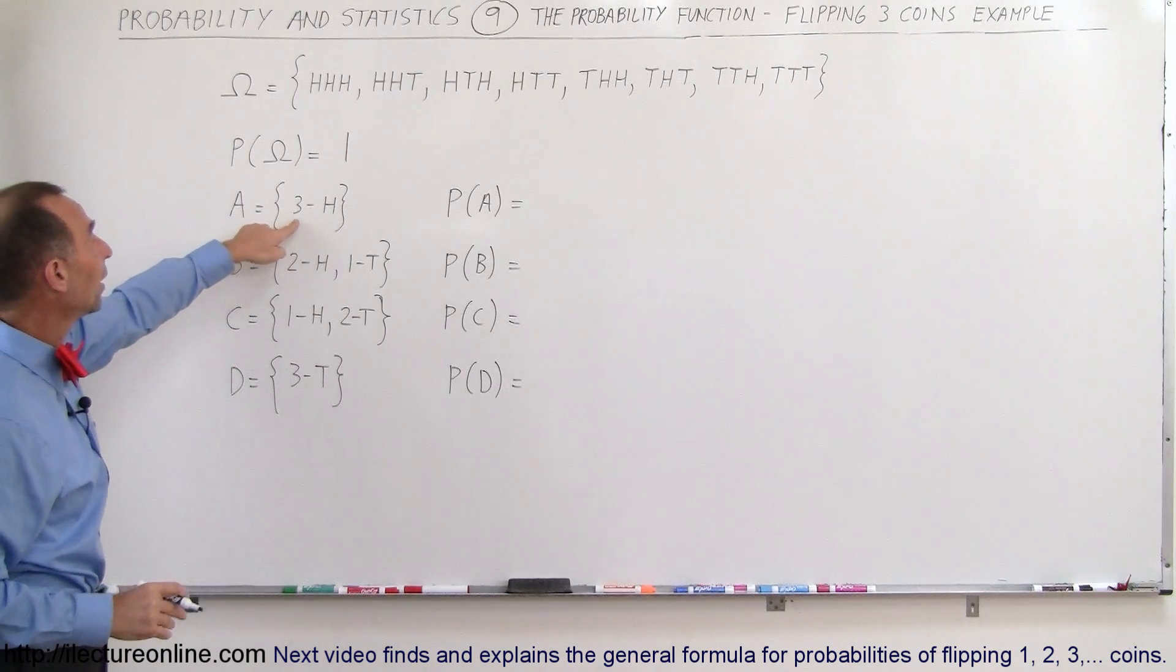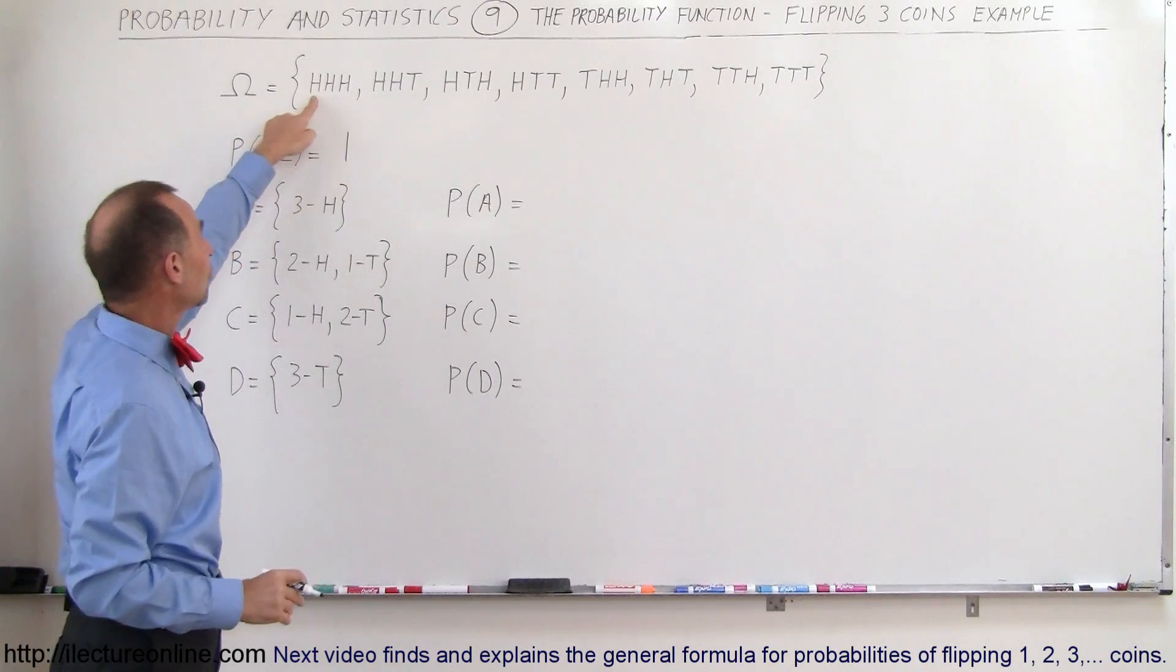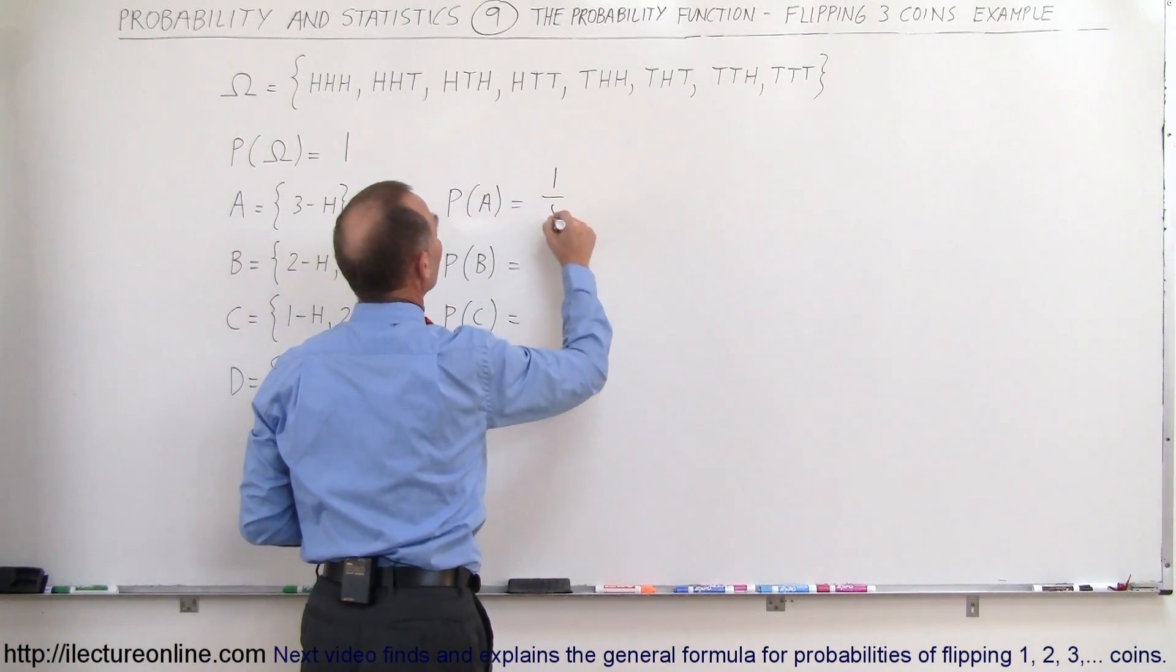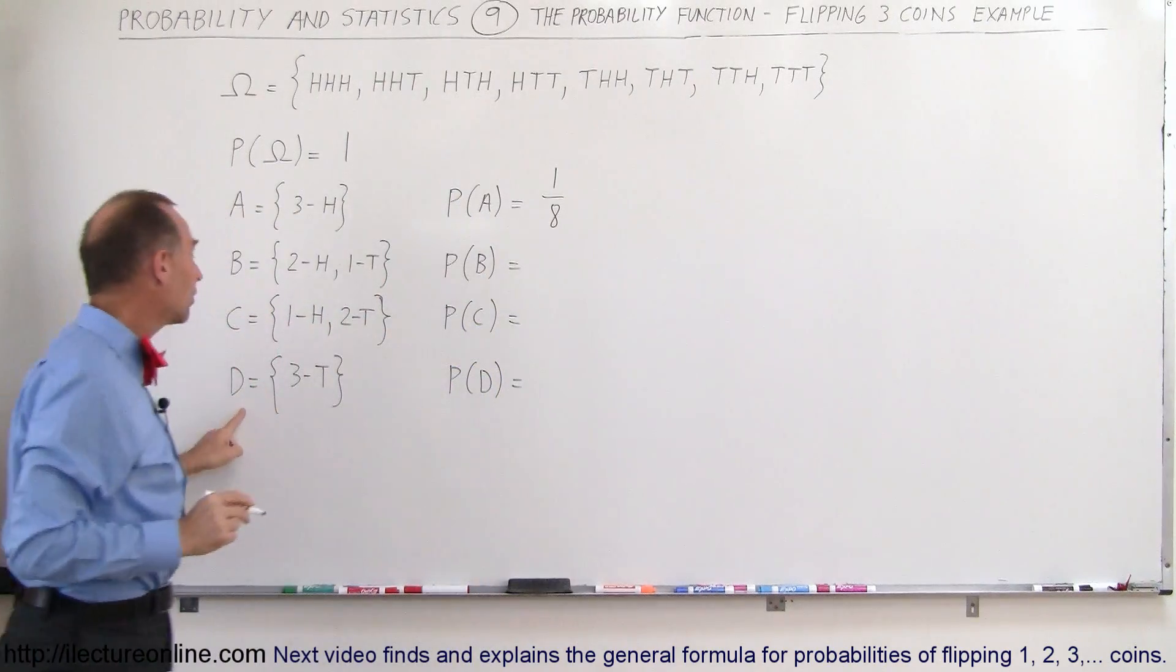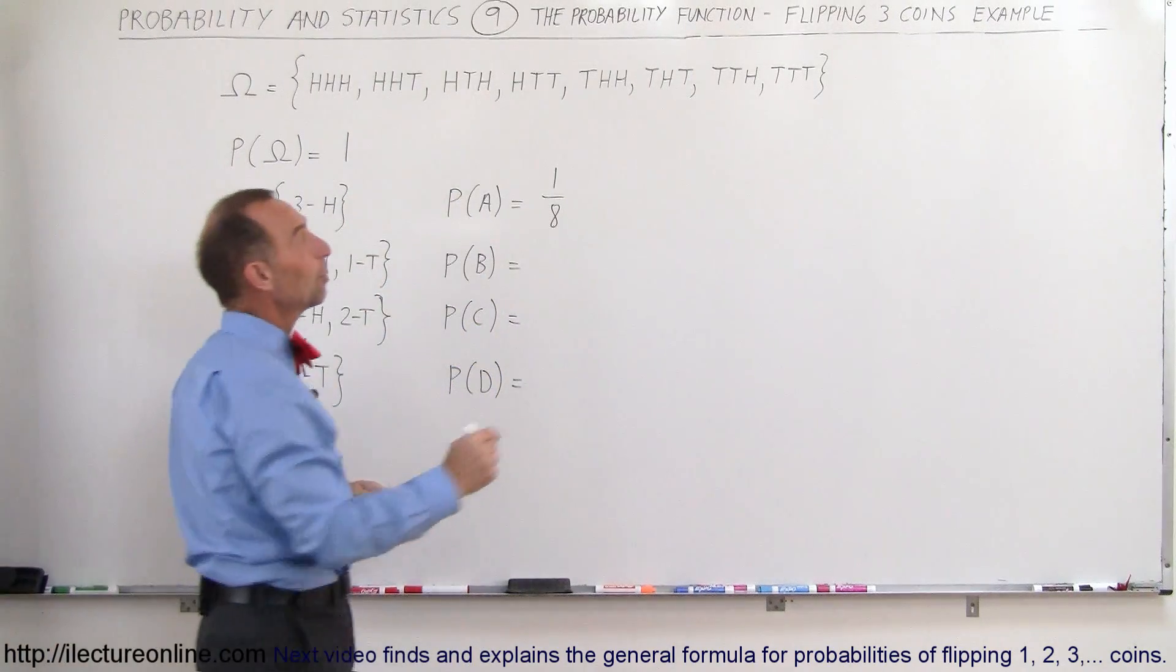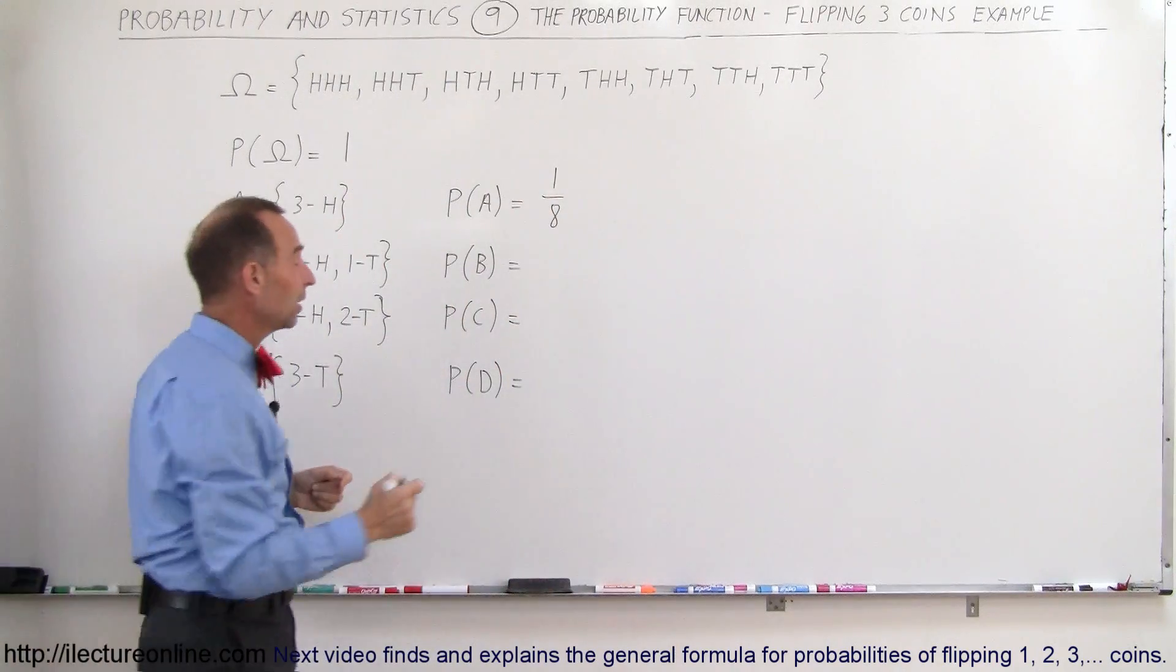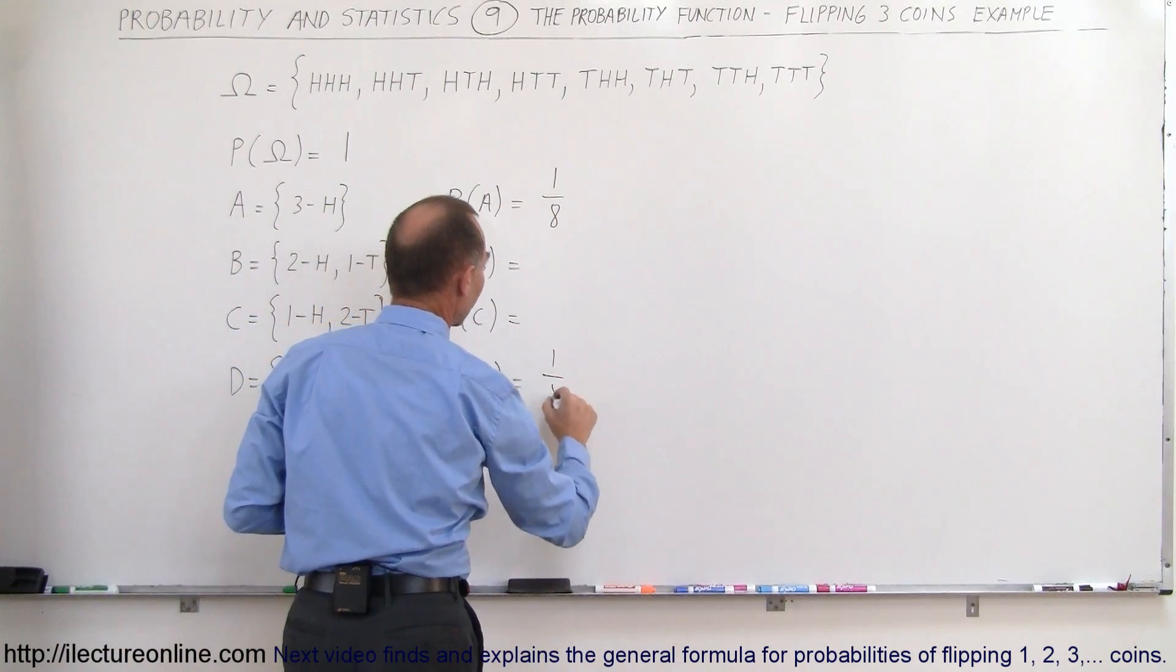Well, in this case, we only have one case out of eight that you can have three heads, so therefore the probability for A would be one out of eight. And likewise for D, since there's only one possibility of getting all three tails, that means one out of eight possibilities, so the probability is one out of eight.